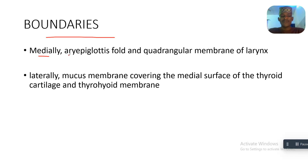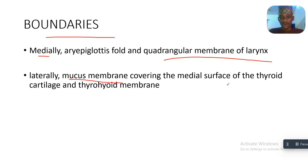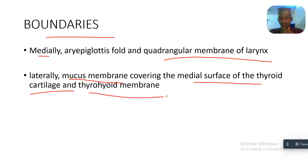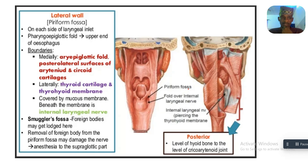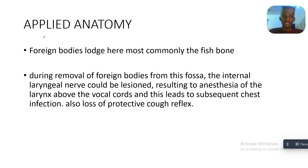Regarding boundaries: medially, it is bounded by the aryepiglottic fold and the quadrangular membrane of the larynx. Laterally, it is bounded by the mucous membrane covering the medial surface of the thyroid cartilage and the thyroid membrane. The internal laryngeal nerve lies below the fold of the piriform fossa.